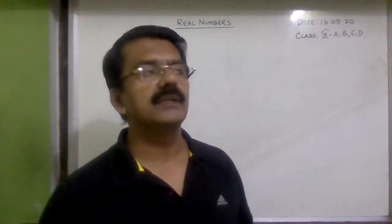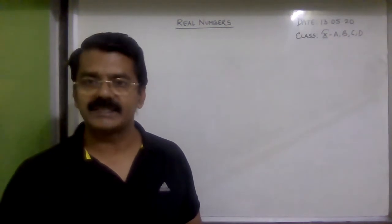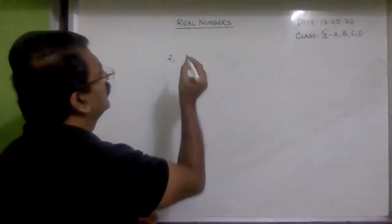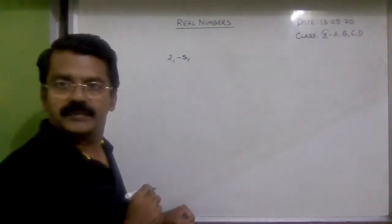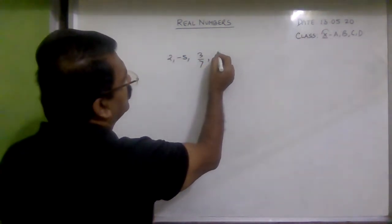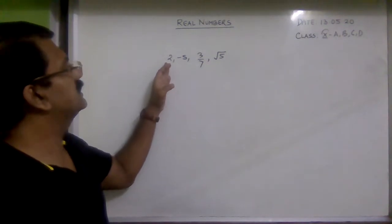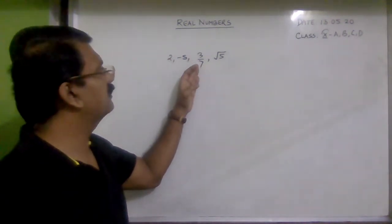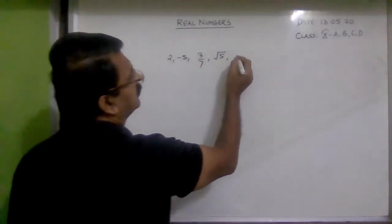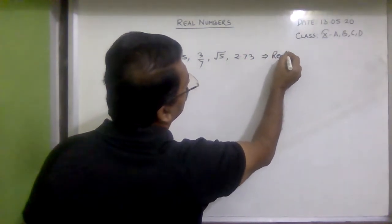First of all, if I have to write a few examples of real numbers: 2 is a real number, minus 5 is also a real number, 3 upon 7 is a real number, and root 5 is also a real number. So you can see positive numbers, negative numbers, fractional numbers, irrational numbers — all are real numbers. For example, 2.73 is also real.